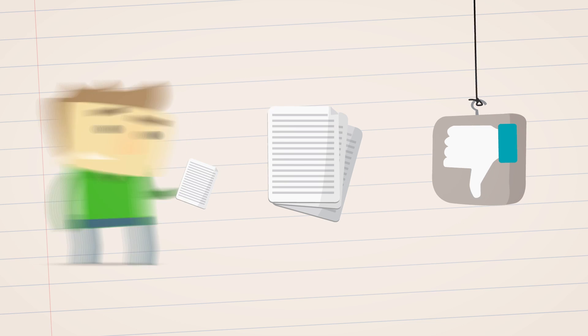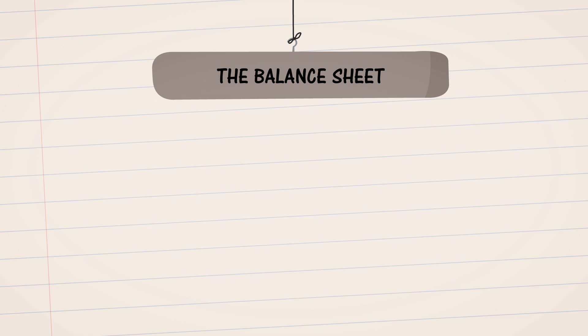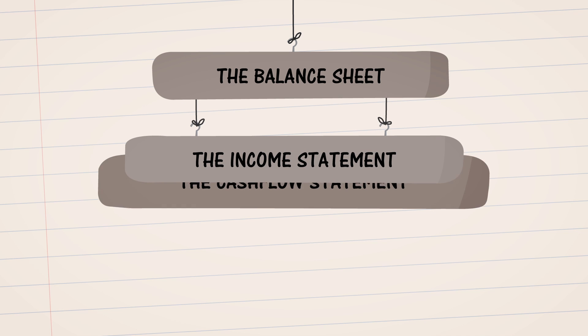There are three different kinds of financial statements: the balance sheet, the income statement, and the cash flow statement.